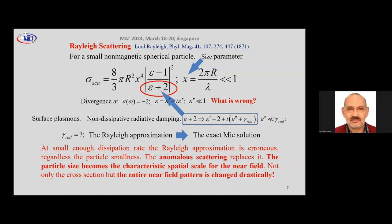Not only does the expression for the cross-section become different in the anomalous scattering regime — the entire scattering process and pattern become different. Importantly, the characteristic scale of the radiation pattern in this case is of the order of the size of the particle, not of the wavelength. And then it occurs that we can tailor and control the radiation pattern at the sub-wavelength scale — that is exactly what we need.